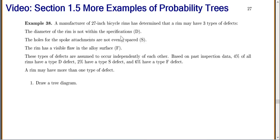The diameter of the rim is not within the specifications, which we'll call D. The holes for the spoke attachments are not evenly spaced, S, and the rim has a visible flaw in the alloy surface, F. When we have D, S, or F, those are our actual defects.